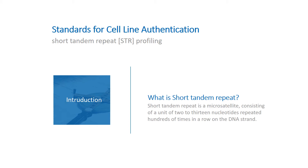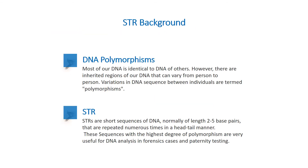Short tandem repeat is a microsatellite consisting of a unit of 2 to 13 nucleotides repeated hundreds of times in a row on the DNA strand. Most of our DNA is identical to the DNA of others; however, there are inherited regions of our DNA that can vary from person to person. Variations in DNA sequence between individuals are termed polymorphisms.